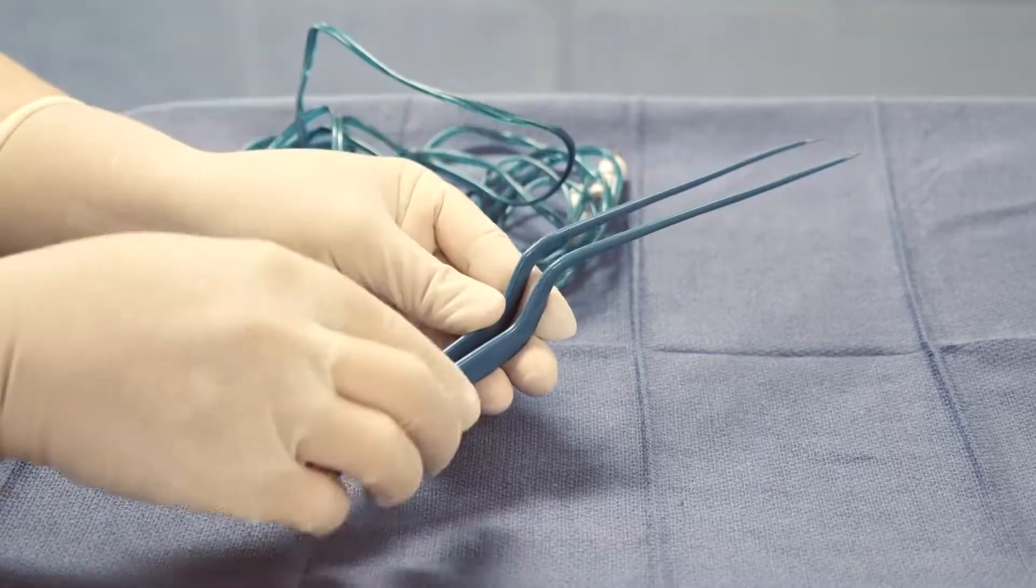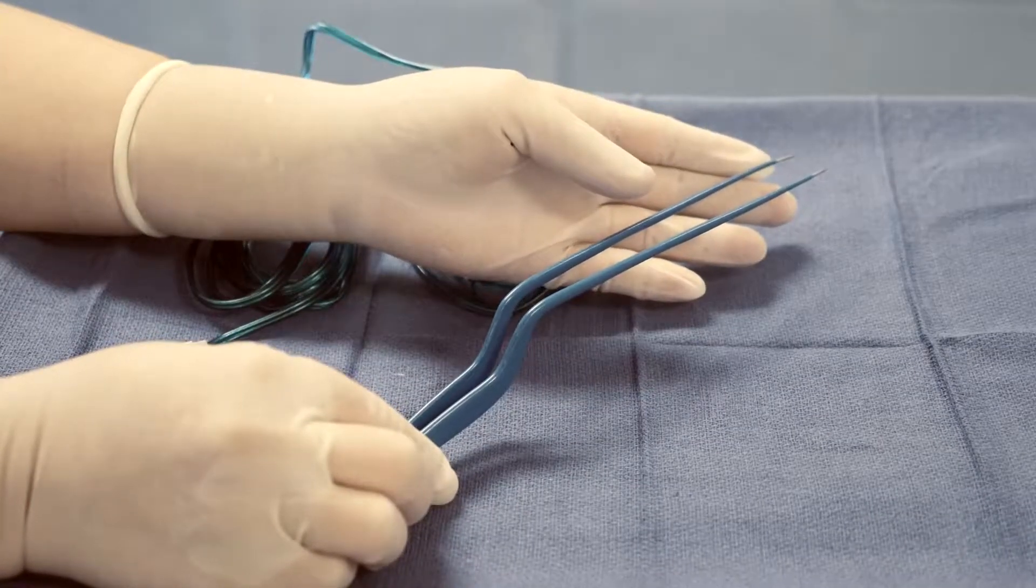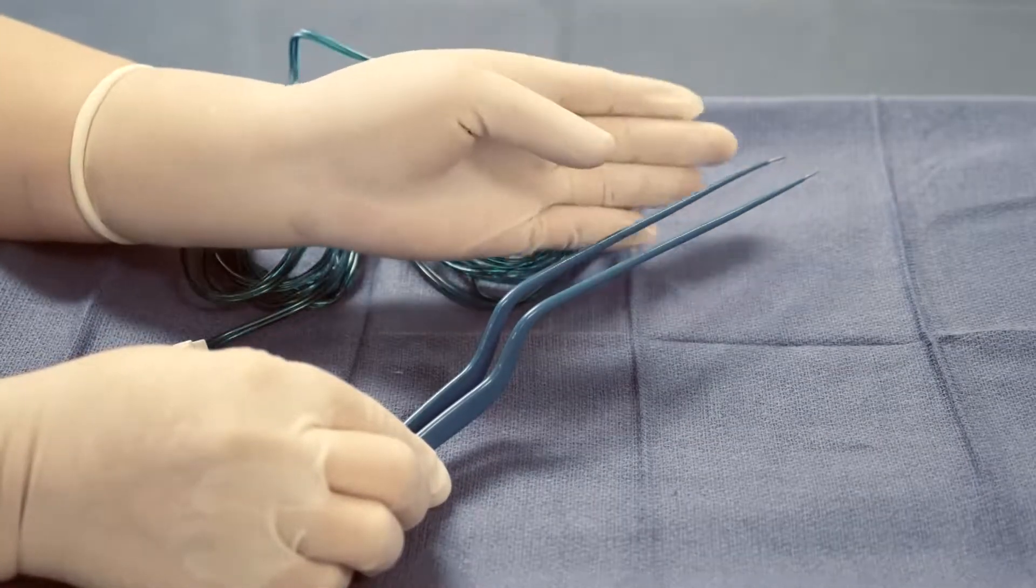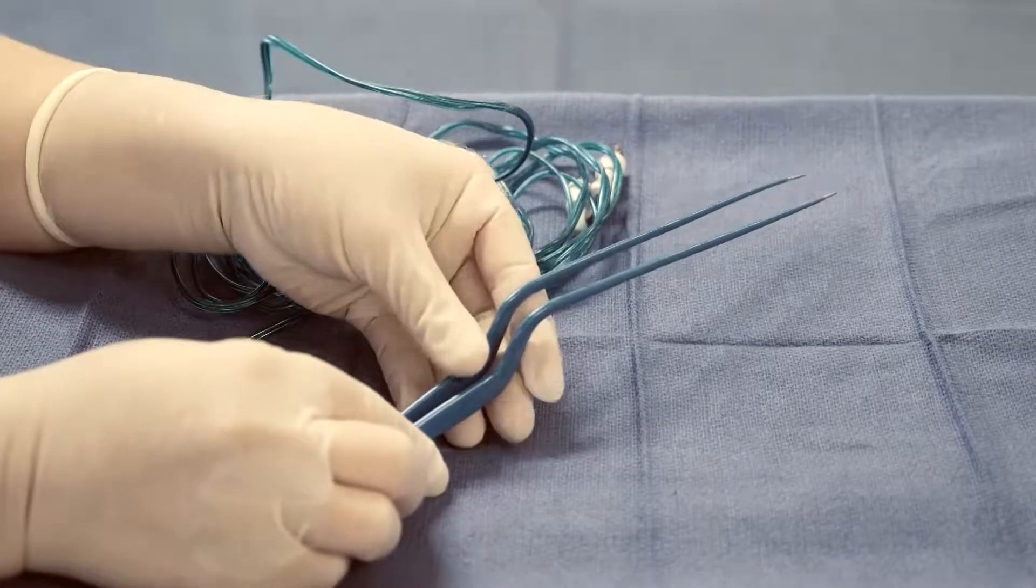This allows the surgeon to cauterize any tissue between these two tips. To enable its bipolar capabilities, the bipolar or bayonet forceps needs a cord.